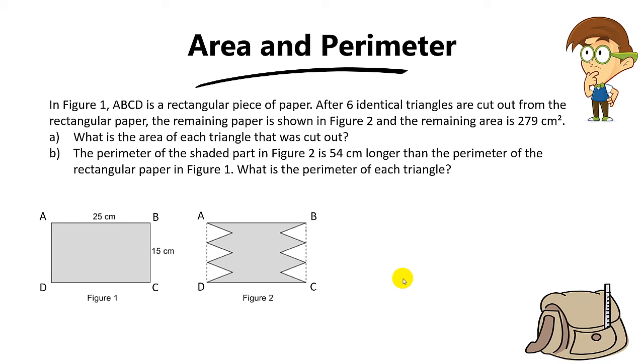The next question we're going to explore is from the PSLV 2020 paper, testing area and perimeter. In figure 1, ABCD is a rectangular piece of paper. After 6 identical triangles are cut out from the rectangular paper, the remaining paper is shown in figure 2, and the remaining area is 279 cm².